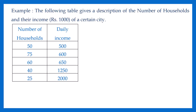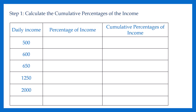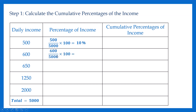Here are examples regarding the number of households and daily incomes in 1000 rupees for a certain city. In the first step, we should calculate the cumulative percentages of the variable. In this example, our variable is income. You have the data, so you can calculate the percentages and then the cumulative percentages. Before we calculate the percentages, we should get the total value of the income column. The total value is 5000. You can calculate the percentage of each income by dividing by 5000. The first one is 10%. Similarly, you can calculate the other percentages.